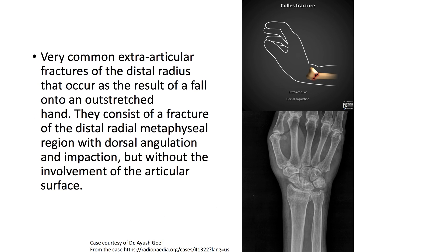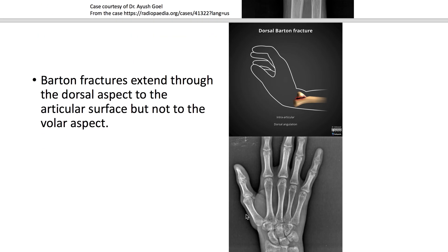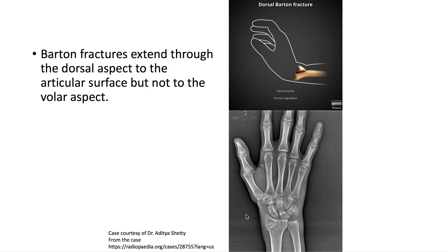Colles' fracture is a very common extra-articular fracture of the distal radius. It usually occurs as the result of a fall onto an outstretched hand. It consists of a fracture of the distal radial metaphyseal region with dorsal angulation and impaction, but without involvement of the articular surface.